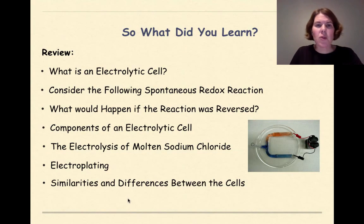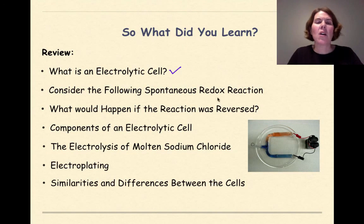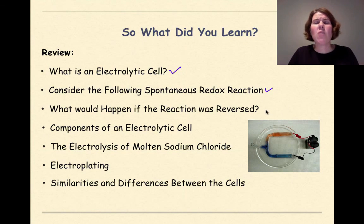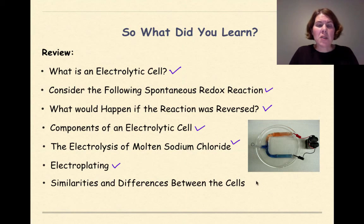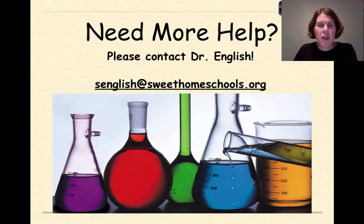So what did we learn in this brief tutorial? We talked about what is an electrolytic cell, looked at a spontaneous redox reaction and then what would happen if we reversed it, the components of an electrolytic cell, the electrolysis of molten sodium chloride, electroplating, and wrapped it up with similarities and differences between the two types of cells. Need more help? Feel free to contact me. Have a great day.